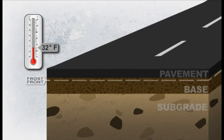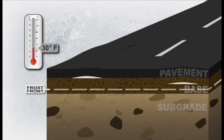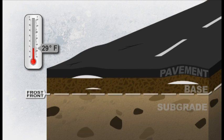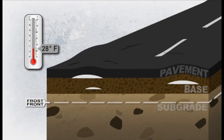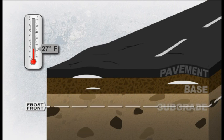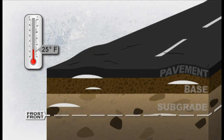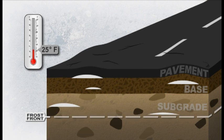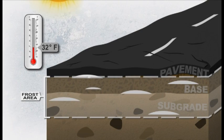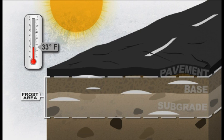This same frost action occurs in our roads. Just as in the laboratory experiment, when water is drawn into the soil by capillary action, ice forms in the soil. That heaves the pavement upward and eventually leads to pavement damage. In the spring, the ice in the soil begins to thaw just as it froze — from the top down.